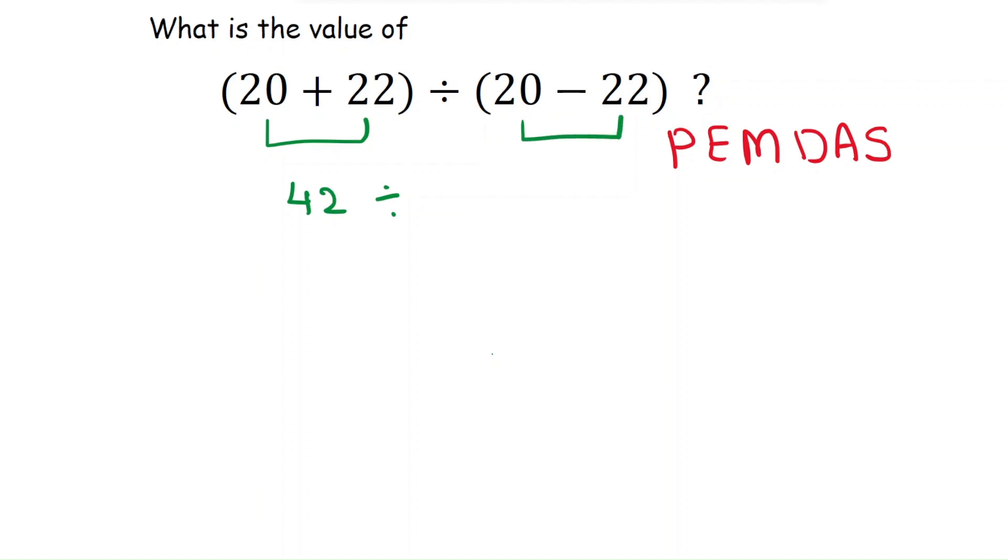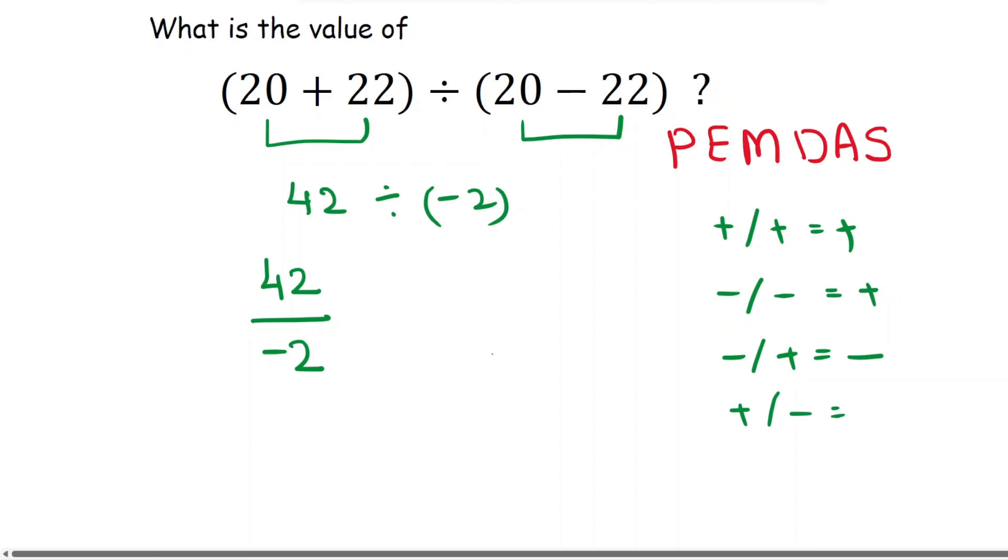We can rewrite this as 42 ÷ (-2). When you are dividing, plus with plus will be plus, minus with minus will be plus, and minus divided by plus will be minus, and plus divided by minus is minus.